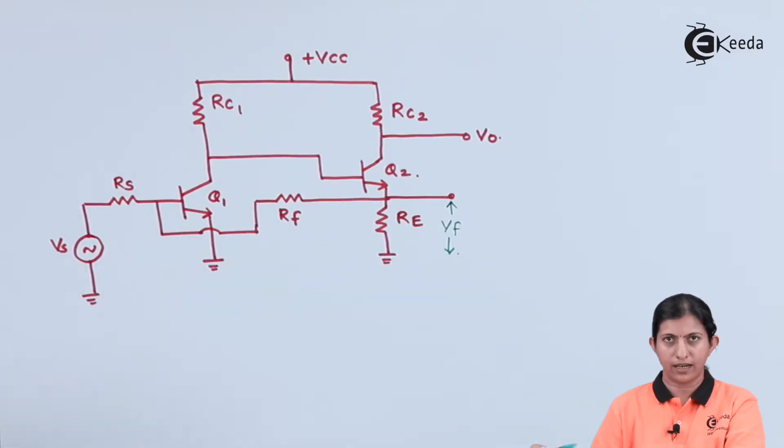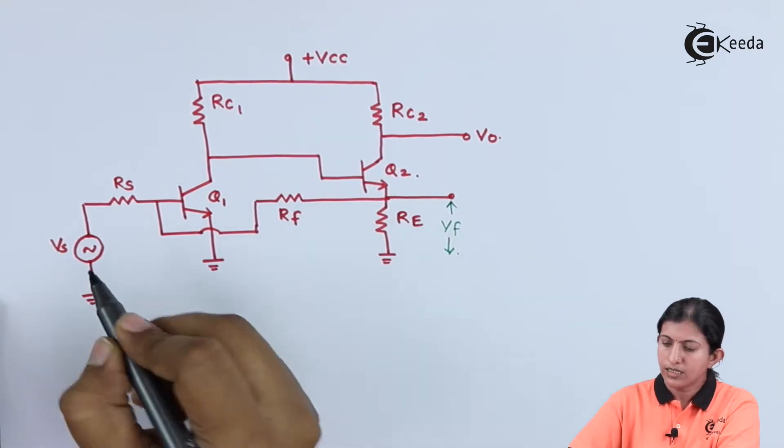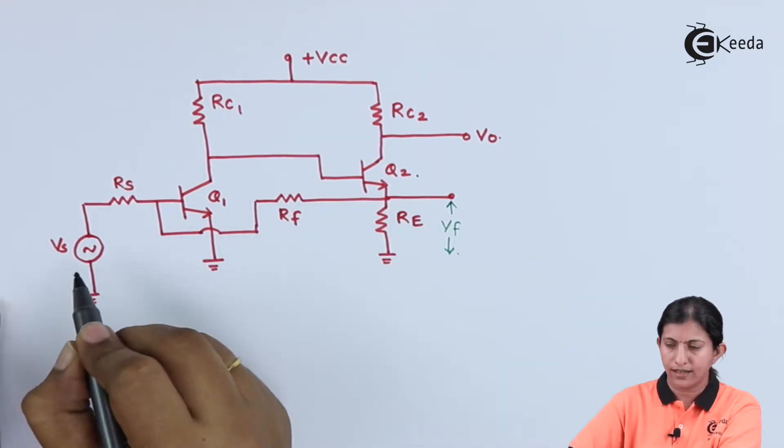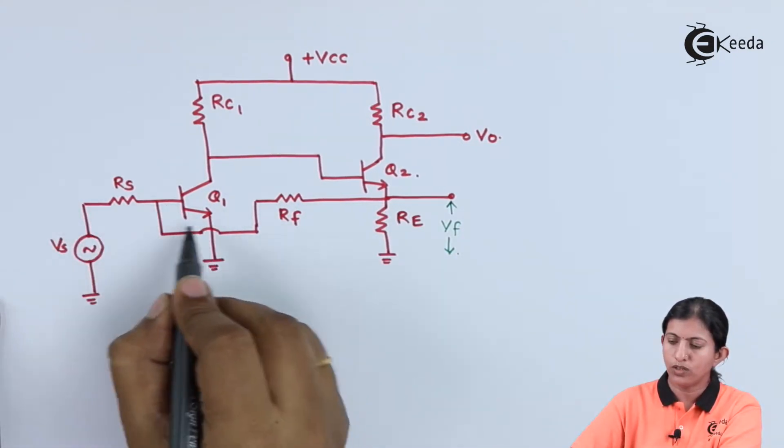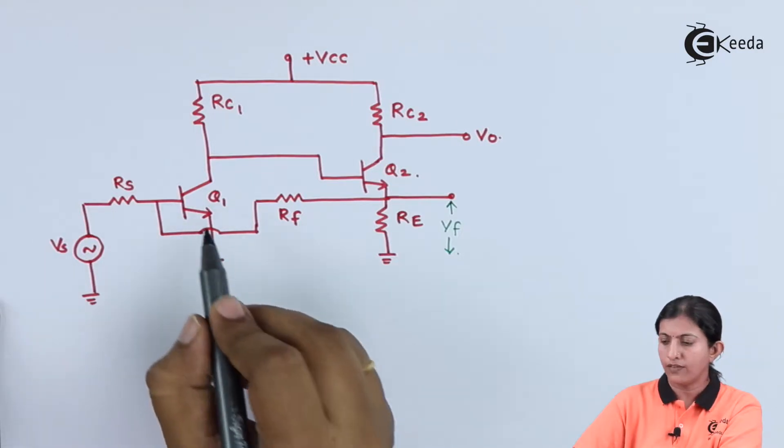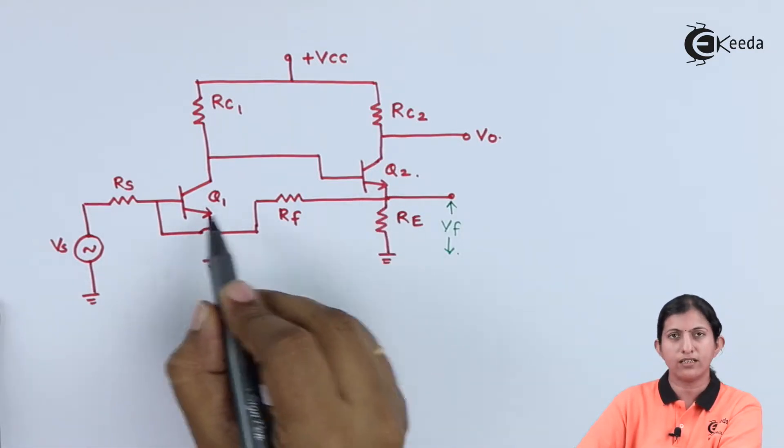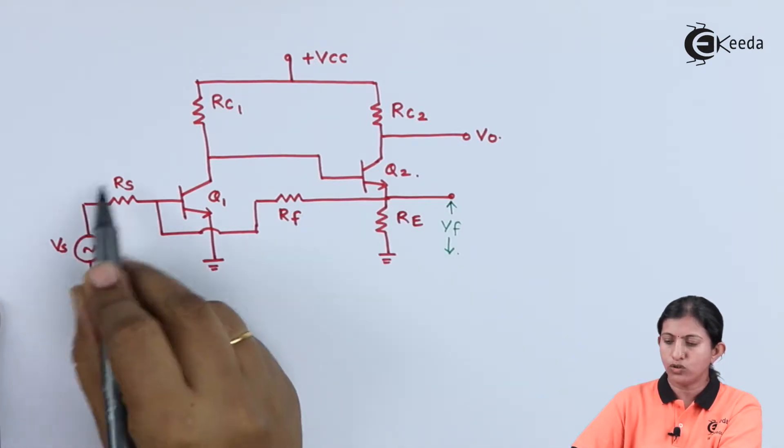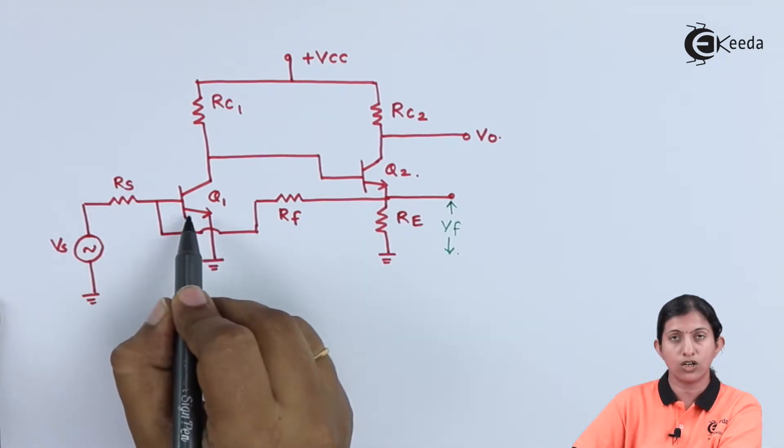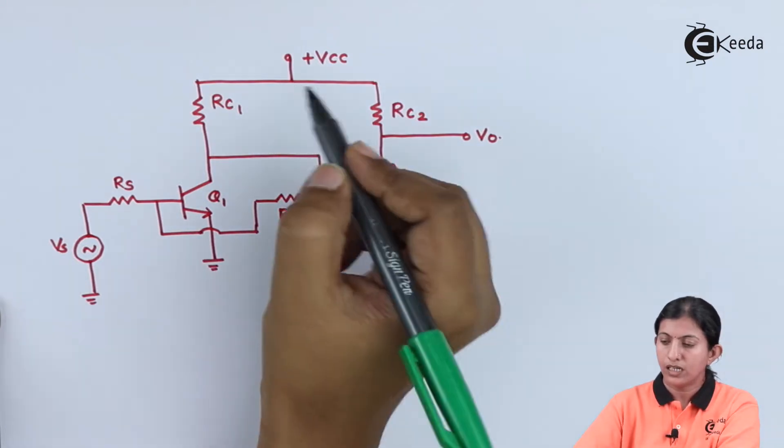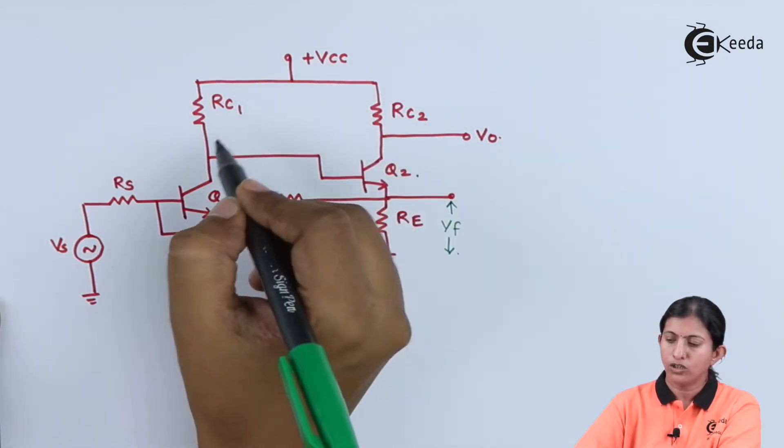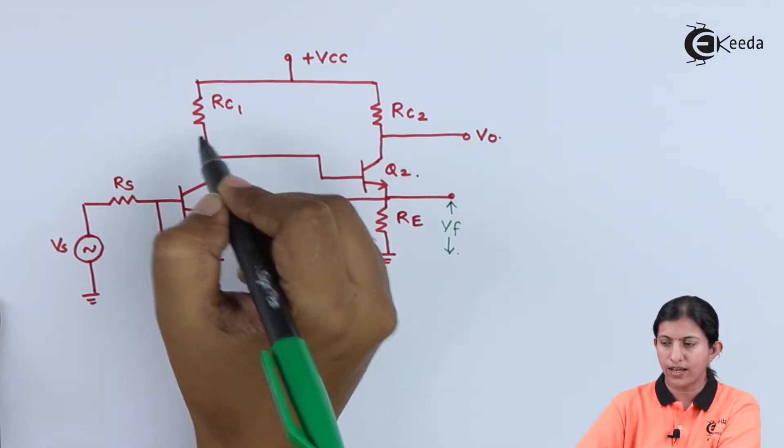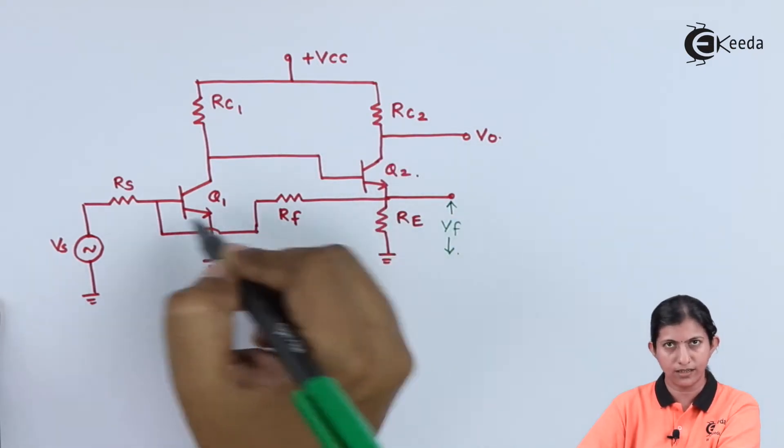In this diagram, supply voltage Vs is given to the first transistor. We are using two transistors, Q1 and Q2. Vs is applied through Rs to transistor Q1. DC supply is given through resistors Rc1 and Rc2 to both transistors.